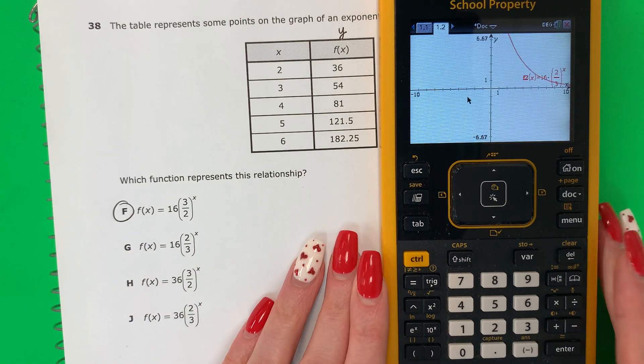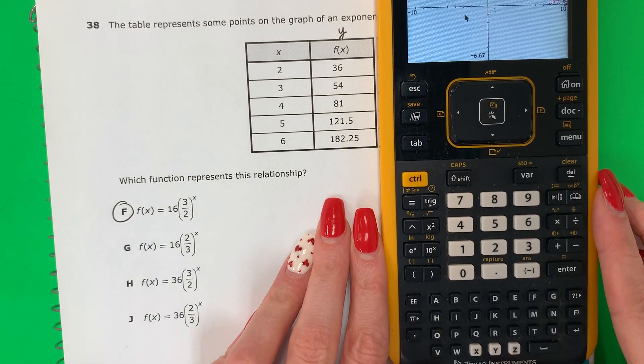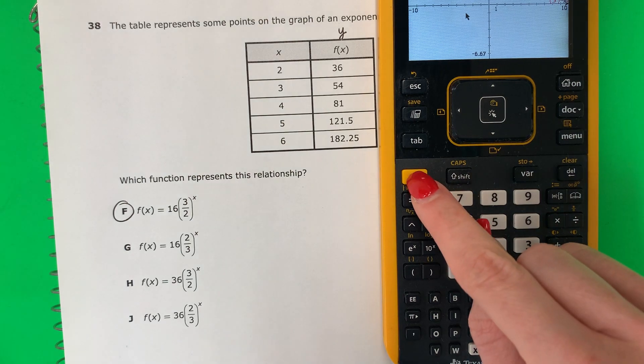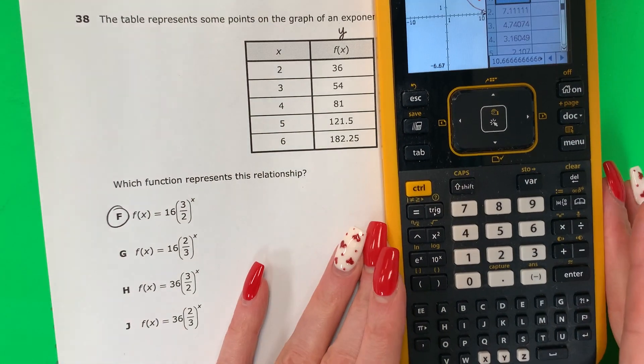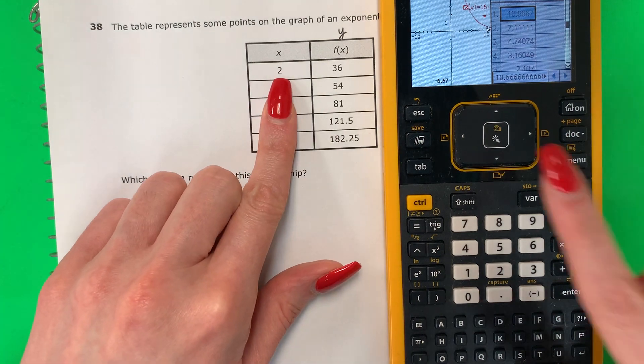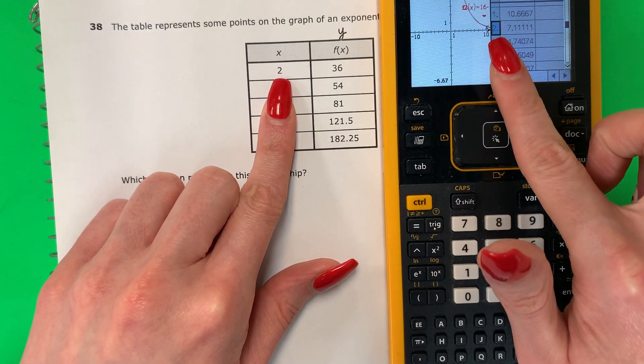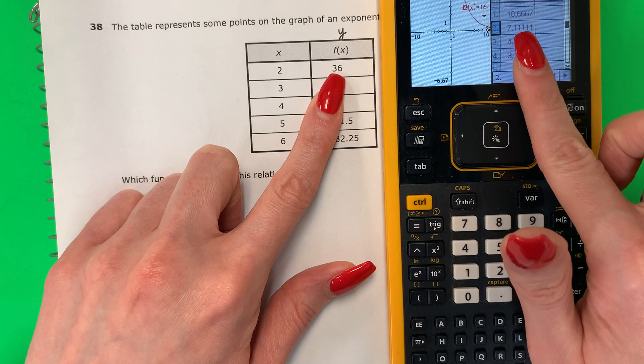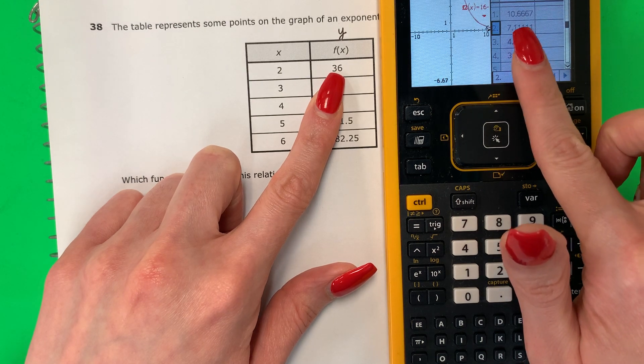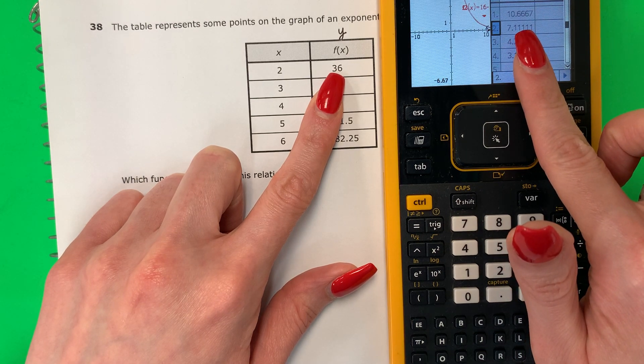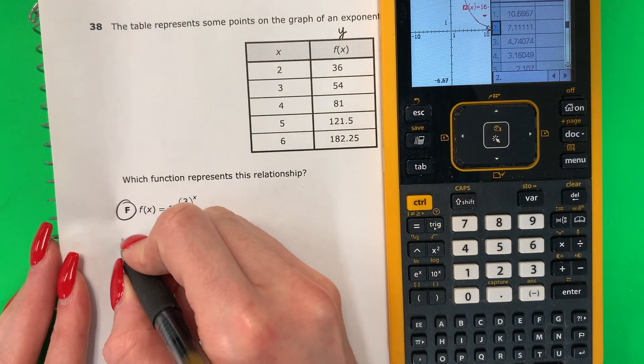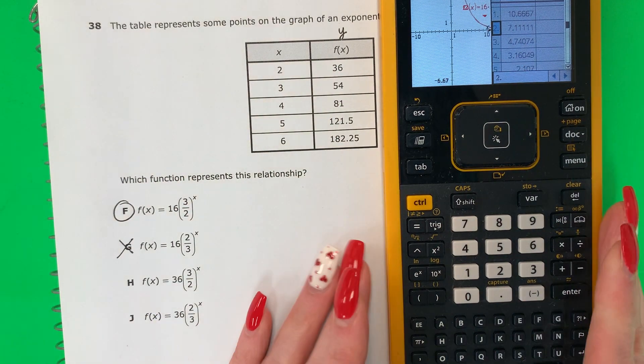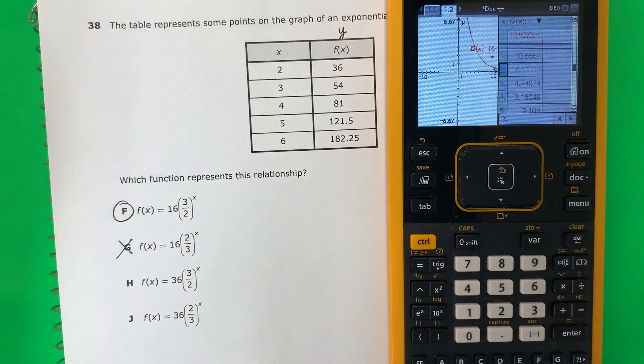To make a table, tabla. Remember, it's control T. Control, T. Okay. Let's check this one. Vamos a revisar. So x 2. Here's x 2. 36. This is 7.11. Aquí es 7.111. I need 36. Necesito 36. So this does not work. No se funciona. Let's do another one to practice. Vamos a hacer una otra para practicar.